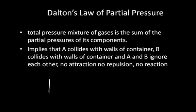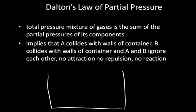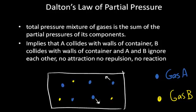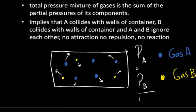So what this means is that if you have a container containing gas A and gas B — gas B symbolized with yellow dots — if we assume that the gas particles are moving in all directions and completely ignoring each other, no attractions, no repulsions, just bouncing off the walls of the container and off each other, then the pressure for gas A plus the pressure for gas B equals the total pressure of the gas in the container.